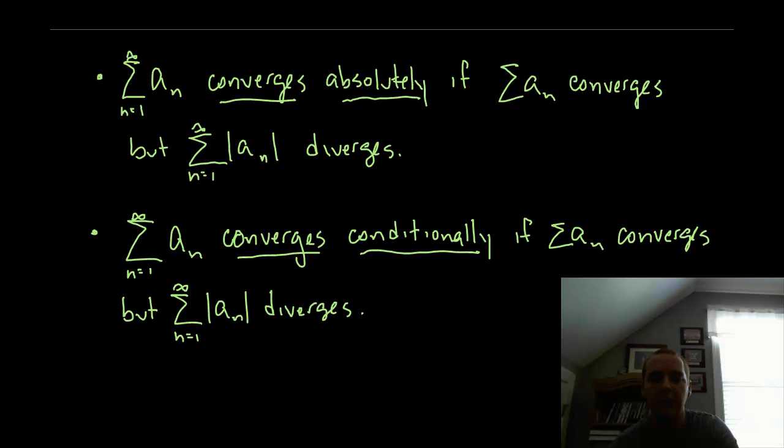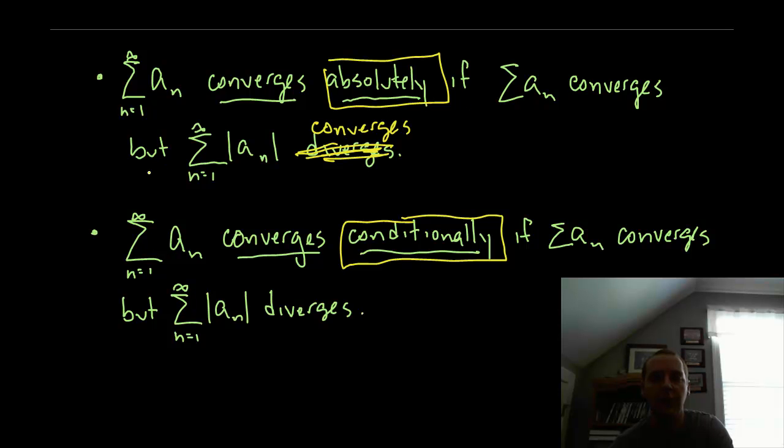Now this actually leads to another discussion. I'll try to go through this very quickly. There's actually two different types of convergence that leads from this discussion here. Certain series can converge absolutely or conditionally based off of this one statement here. The series converges absolutely if the regular series converges and if you take the absolute value of the terms. I just noticed I have a typo here. This should be converges.